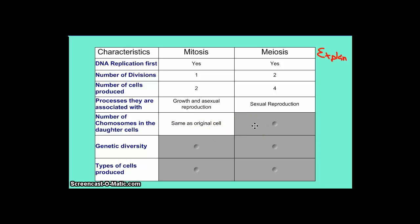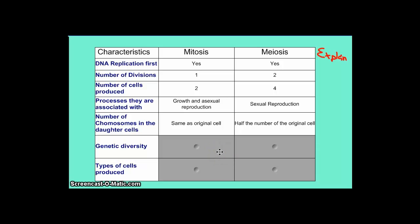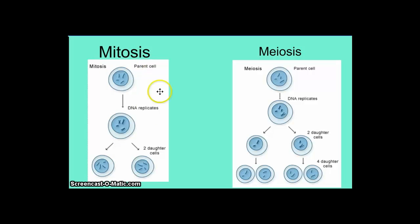Number of chromosomes in the daughter cell: in mitosis the chromosome number is the same as the original, because we're making cells that are identical to the original. In meiosis it's half the number of the original cell. This is important so that the chromosome number can be returned to the original number after sexual reproduction. In mitosis, the parent cell has four chromosomes and both daughters have four chromosomes — they are identical to the parents.